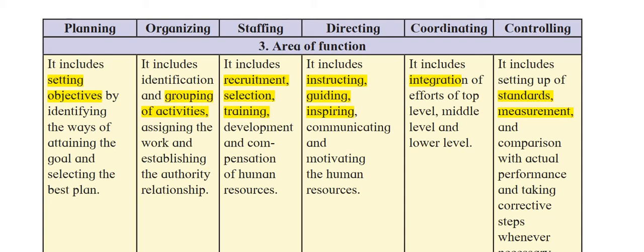For staffing, the area of function includes recruitment, selection, training, development, and compensation of human resources — recruiting and selecting the right person for the right job and running training programs to update them. For directing, the area of function includes instructing, guiding, inspiring, communicating, and motivating human resources so that things are done smoothly.